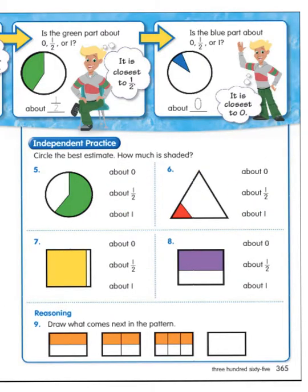All right, number five. The directions say circle the best estimate. How much is shaded? Number five. Is it closest to about zero, about one half, or about one? Well, I wouldn't say it's close to zero because a lot of it's shaded, but it's not almost the whole thing. I'd say it's closest to one half. Go ahead and go to number six and tell me if the amount shaded is closest to zero. One half, or one. Number seven, same. Number eight, the same. Circle what is shaded. Estimating. And number nine.